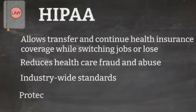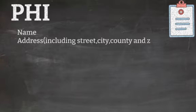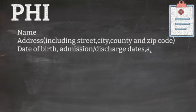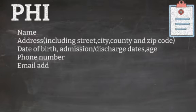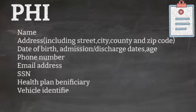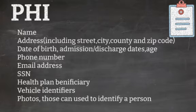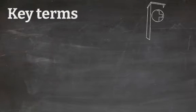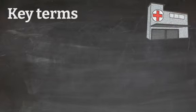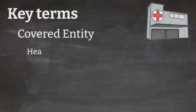PHI stands for Protected Health Information. Examples of PHI include name, address, date of birth, phone numbers, email address, social security number, and more. Key terms in HIPAA include covered entities.